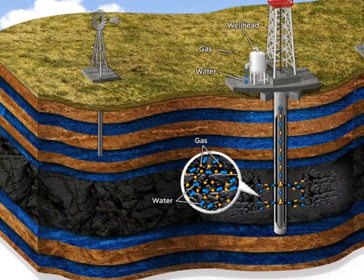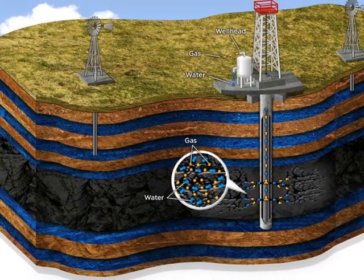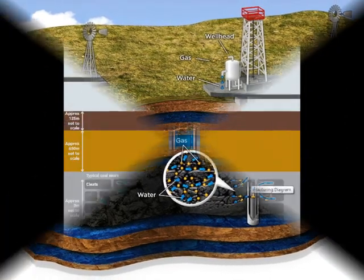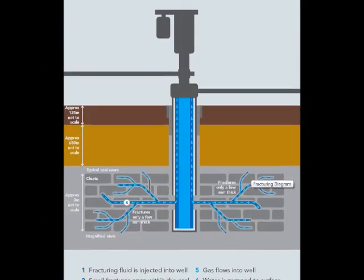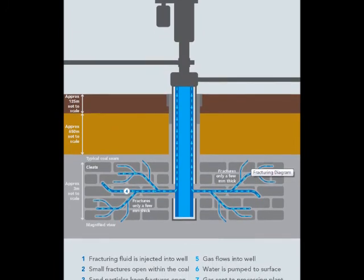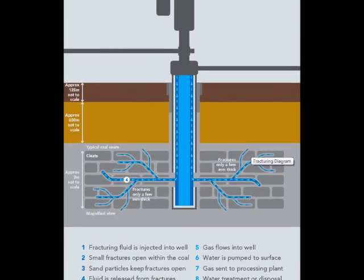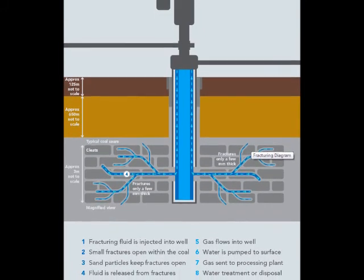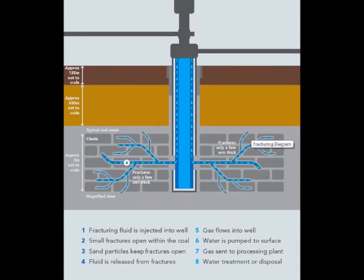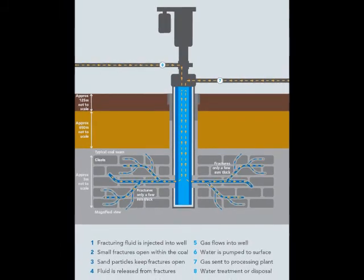Coal seams are present below ground depths of 300 to 1000 meters. The commonly used method of extracting coal seam gas is fracking, which is also known as hydraulic fracturing. This method is used to stimulate and accelerate the flow of coal seam gas by drilling into the coal seams and pumping a high pressure injection of sand, water and harmful chemicals, causing fractures through which the coal seam gas can escape.